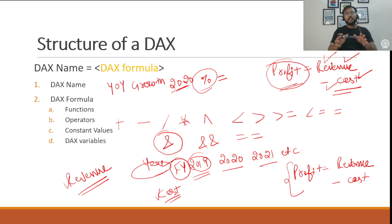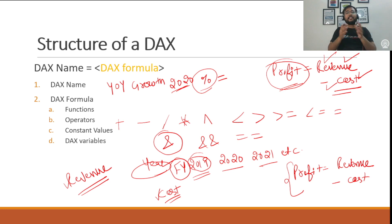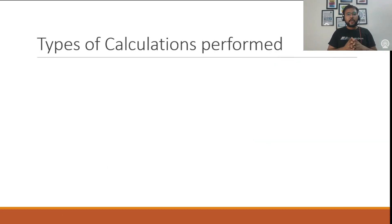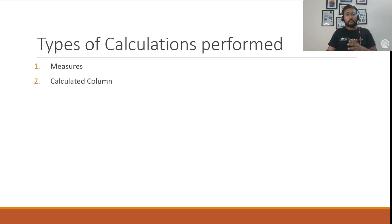So till now we understand what is a DAX, the various components of a DAX equation, and all the basic components we can use while writing a DAX formula. Now let's understand how we can implement a DAX in Power BI. A DAX equation can be used to perform three types of calculations: the first type is measures, the second is calculated columns, and the third is calculated tables.